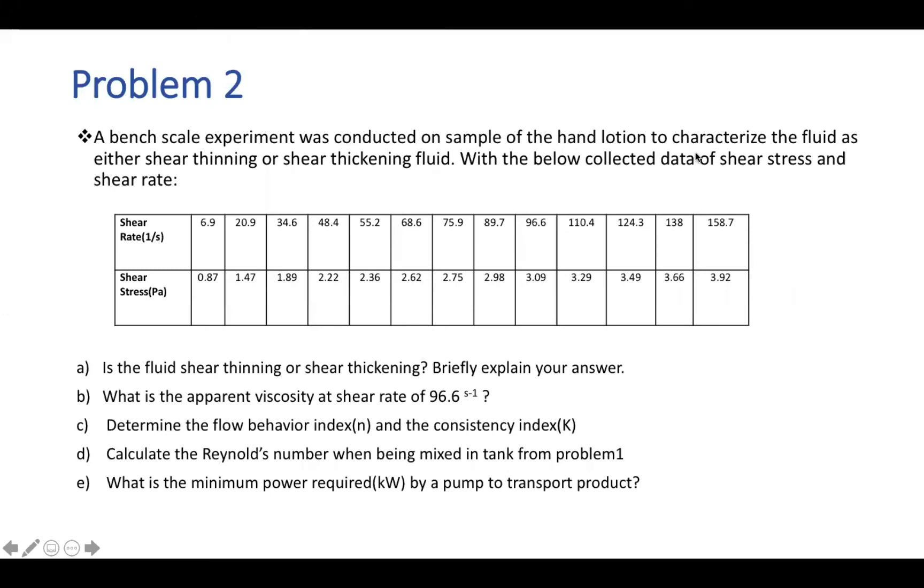So now we work on problem number two. So here we have a case where we have a bench scale experiment, which is conducted on a sample of hand lotion to characterize our fluid as whether it be a shear thinning or a shear thickening fluid. And of course, using the below collected data of a shear stress or a shear rate, otherwise known as rheological data set, we asked a few questions of you to answer. So the first question, of course, is to determine whether or not the fluid is shear thinning or shear thickening. And of course, briefly explain your answer to why such is so. Then we ask of you to calculate what the apparent viscosity is at a specific shear rate. Then we want you to determine the flow behavior index and the consistency index based off the data set provided above as well.